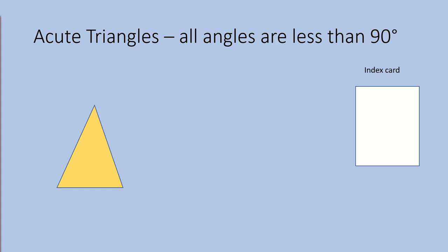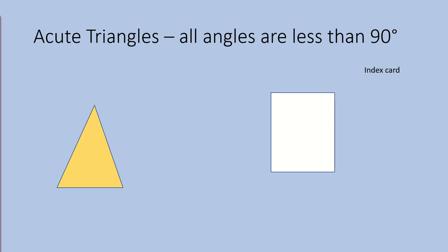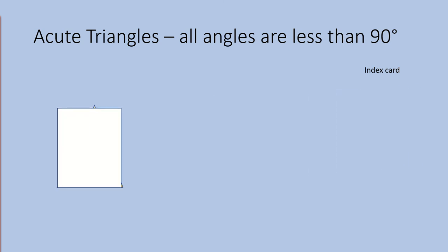Now let's look at a different type of triangle. This yellow triangle is classified as an acute triangle. It is an acute triangle because all of its angles are less than 90 degrees. Remember that when you use the corner of an index card and it fits perfectly in that corner, that corner is 90 degrees. If you put the index card on an angle and the index card is bigger than the angle, that means that the angle is less than 90 degrees.